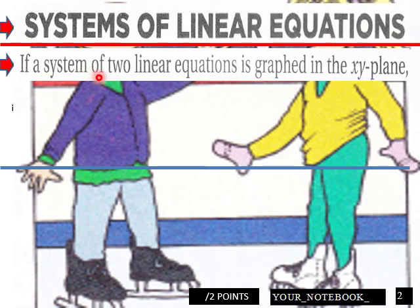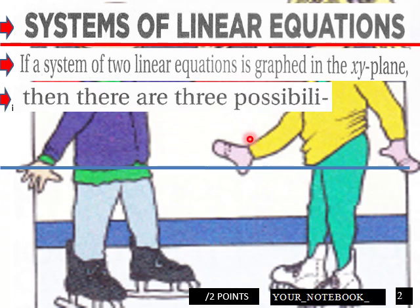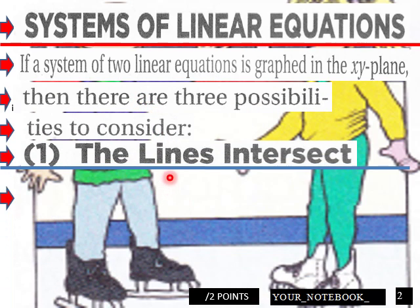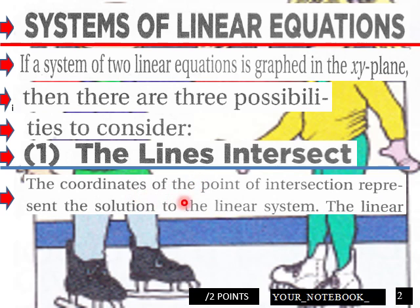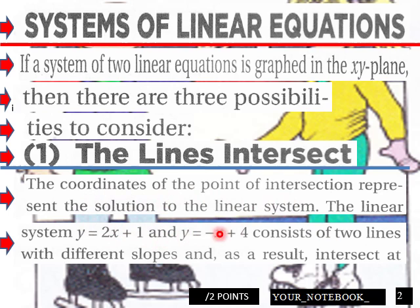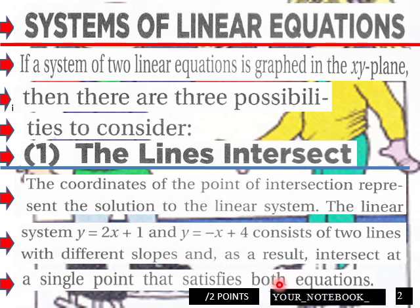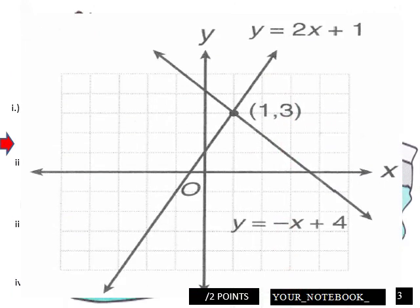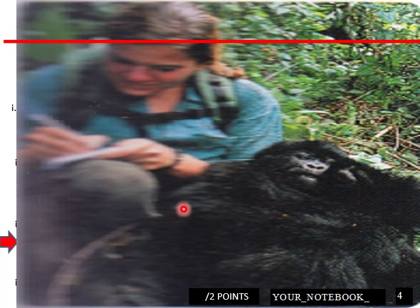Systems of linear equations. The two system of linear equations graphed in the xy-plane, and there are three possibilities to consider. The lines intersect. The coordinates of the point of intersection represent the solution to the linear system. The linear system here consists of two lines with different slopes, and as a result, intersect in a single point satisfying both equations. So that was an example there of a graph intersecting.